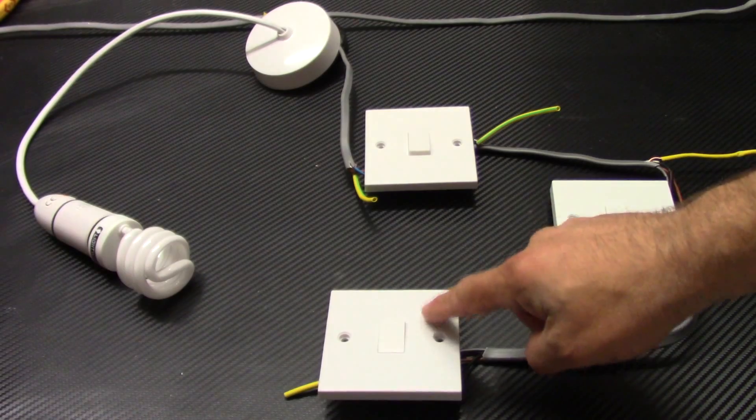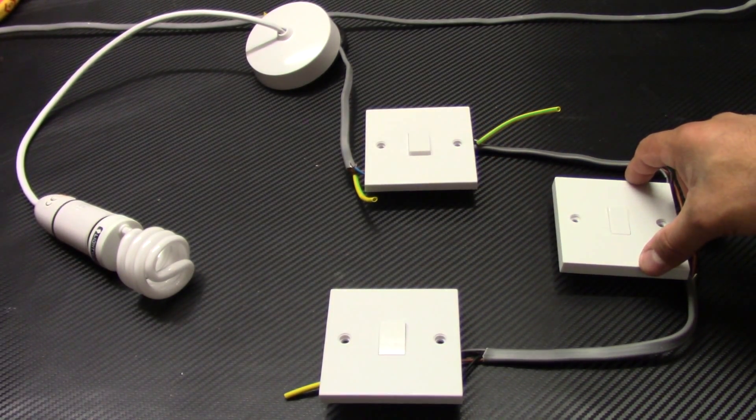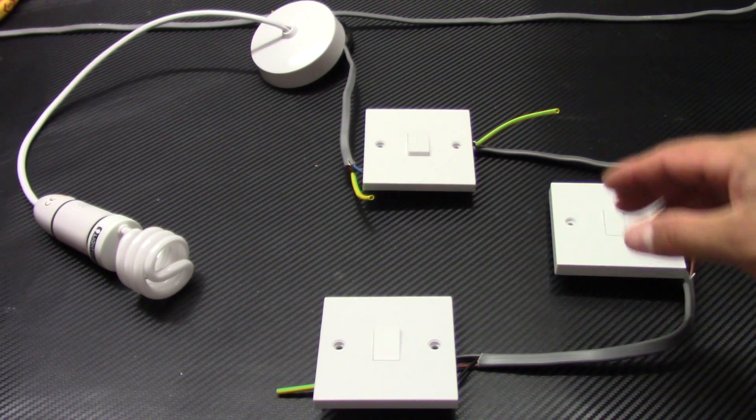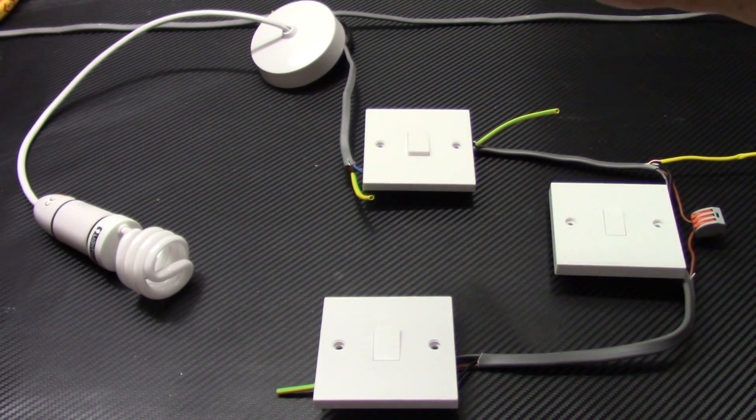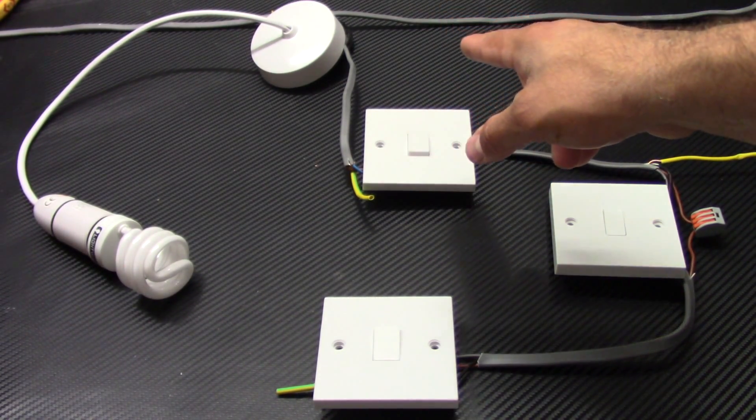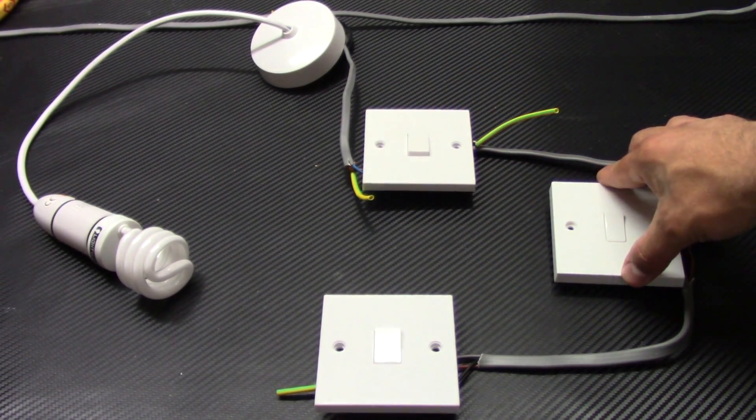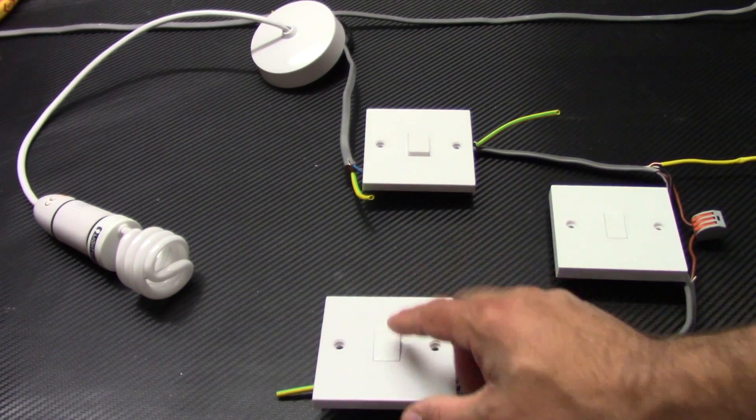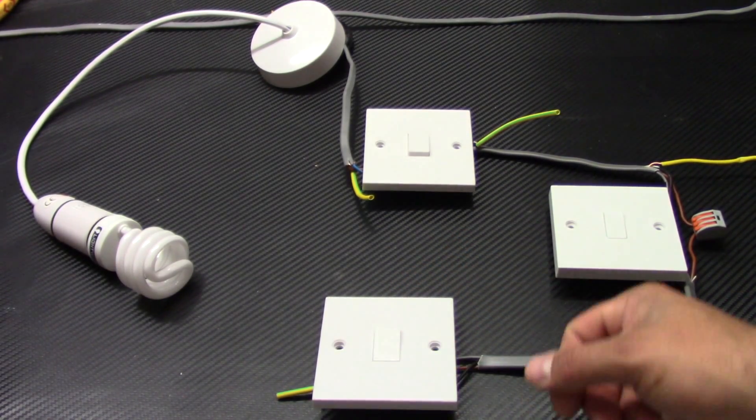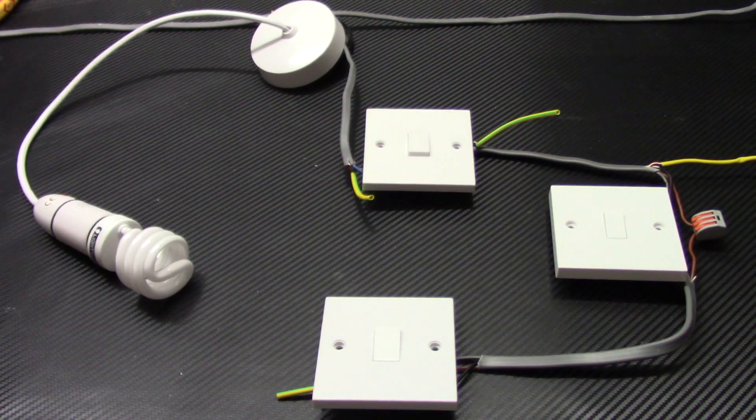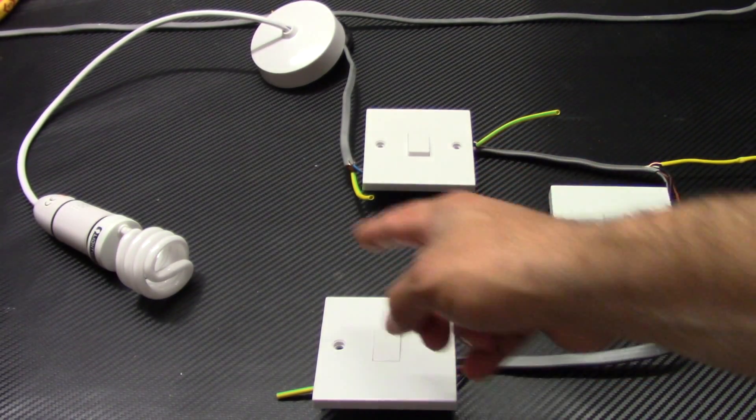These two are two-way switches. This one is intermediate switch. Let's say you've got a staircase. You need to install one switch upstairs which will be this one. One switch on the landing which will be this one. The one switch downstairs is gonna be this one. The light fitting is somewhere in the middle of the staircase. So then from each of the switch you can control this light.